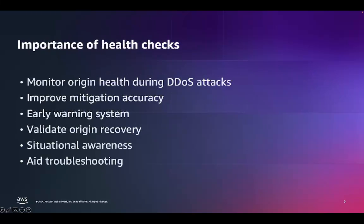Health checks allow Shield Advanced to detect degraded application availability due to high volumes of DDoS attack traffic overwhelming the origin. Health data provides Shield with additional context to fine-tune thresholds and traffic management. Changes in health metrics act as an early indicator that an attack may be occurring. Health checks also help confirm when an overloaded origin has sufficient capacity again after attack mitigation. Granular health metrics give visibility into the impact of DDoS attacks on targets, and health indicators help determine whether the root cause is DDoS or something else.